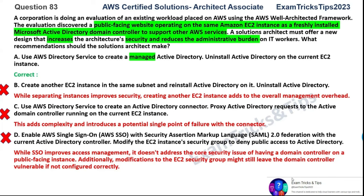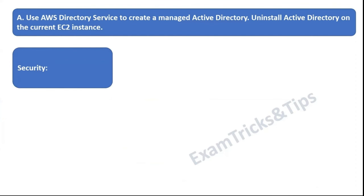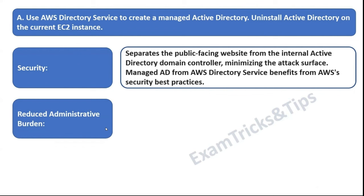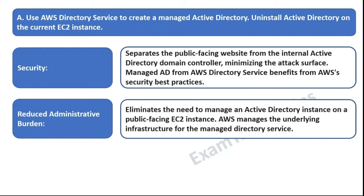This was a slightly complicated problem to understand based on the options, but once solved you can realize how straightforward it is. The answer for question 83 is option A: use AWS Directory Service — the managed Active Directory — and uninstall the current Active Directory software from the EC2 instance. This solution improves security by separating the public-facing website from the internal Active Directory domain, minimizing the attack surface and leveraging AWS's security best practices. As a managed solution, it also reduces administrative burden — you no longer need to manage the underlying infrastructure.